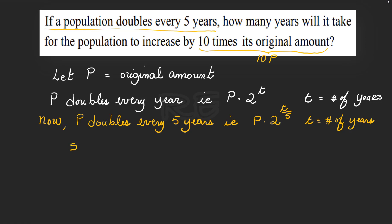Now, that amount should be equal to 10 times the original amount, which is 10P. So, 10P is equal to P times 2 to the t over five. And we are looking for t, which is the number of years.